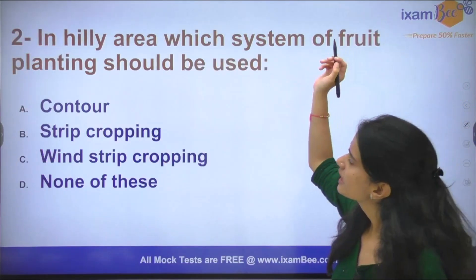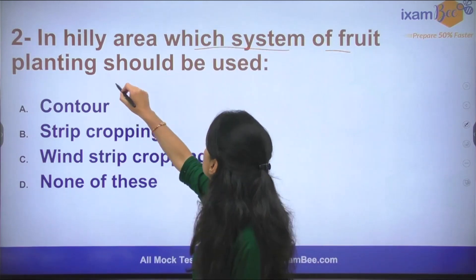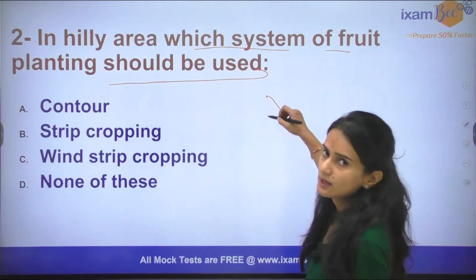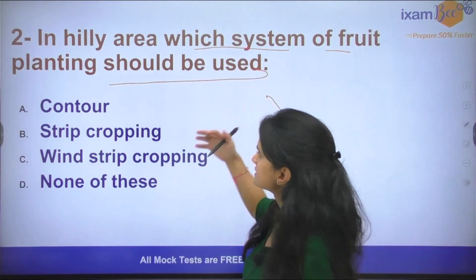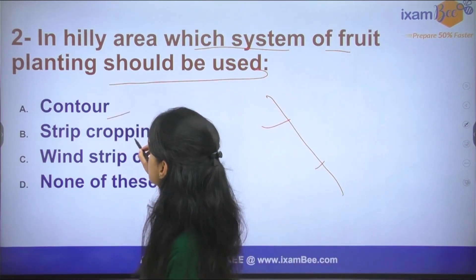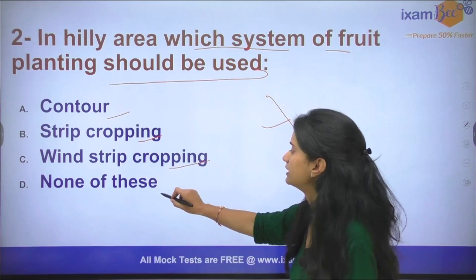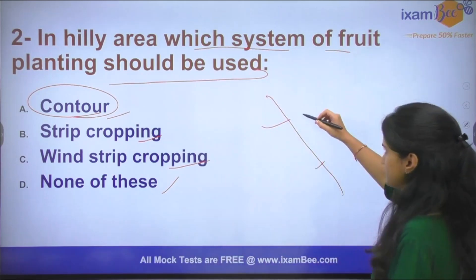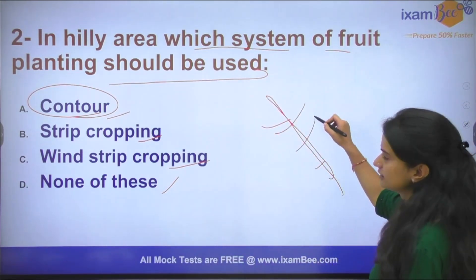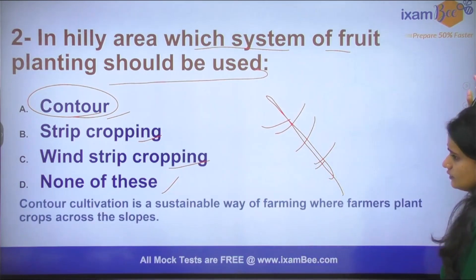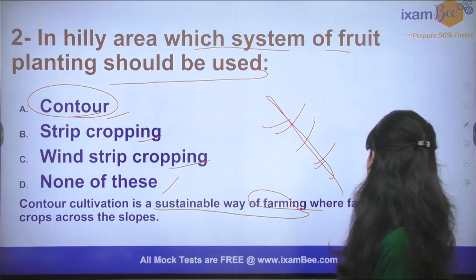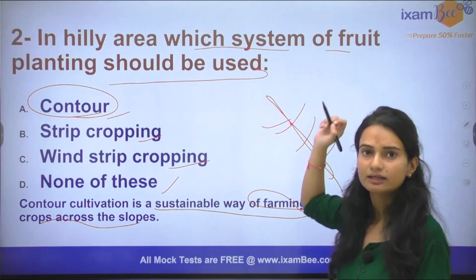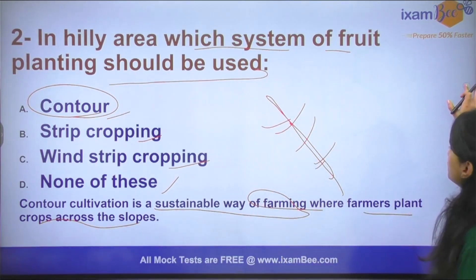Moving on to the next question: In hilly areas, which system of fruit planting should be used? We know that there are slopes in hilly areas. The options are contour system, strip cropping, wind strip cropping, and none of these. The answer is contour farming — when we plant across the slopes, that is called contour farming. Contour cultivation is a sustainable way of farming where farmers plant crops across the slopes, and this also helps in preventing soil erosion.